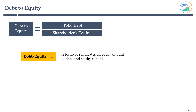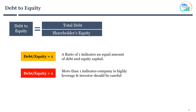A debt to equity ratio of 1 indicates an equal amount of debt and equity capital. More than 1 indicates the company is highly leveraged and investors should be careful. A high debt to equity ratio can result in volatile earnings as a result of additional interest expense. If the company's interest expenses are too high, it may increase the company's chances of a default or bankruptcy.